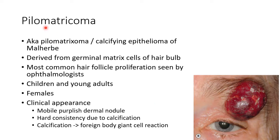The next lesion we are going to discuss is pilomatricoma. It is also known as pilomatrixoma or calcifying epithelioma of Malherbe. It is derived from germinal matrix cells of the hair bulb and it is the most common hair follicle proliferation seen by ophthalmologists.